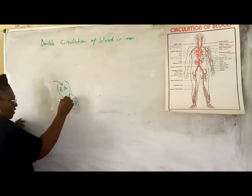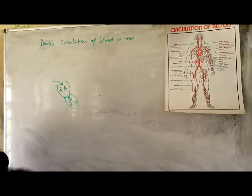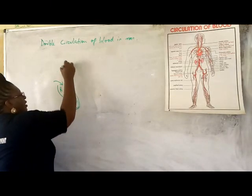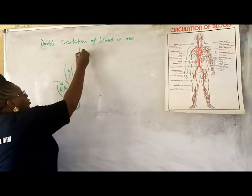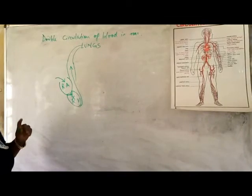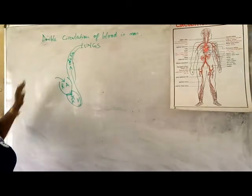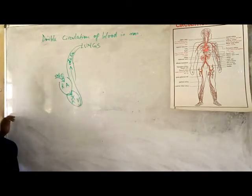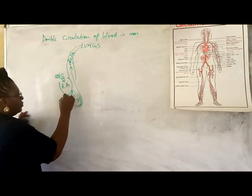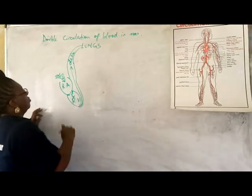Blood enters into the right ventricle, and immediately the right ventricle also contracts, forcing the blood out of the heart. It is going to the lungs. Remember, the blood is deoxygenated — it contains very little oxygen and more carbon dioxide. It entered the right atrium deoxygenated, then entered into the right ventricle, and now it is being pumped out to the lungs.